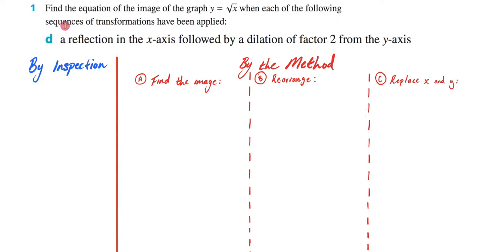Alright, so we're doing exercise 7c, and in this video I'll be answering question 1d, which says find the equation of the image of the graph y equals the square root of x when each of the following sequences of transformations have been applied.